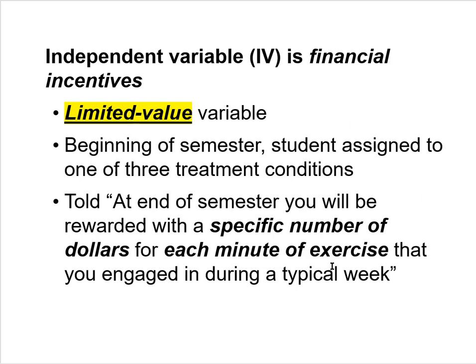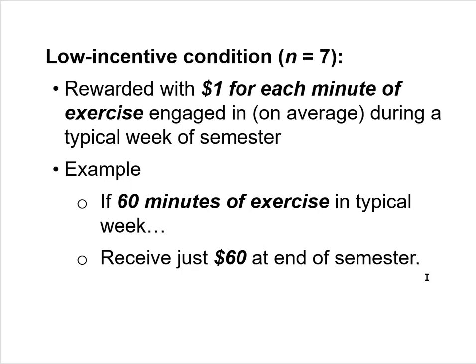Financial incentives is a limited value variable — a variable that consists of two to six conditions. At the beginning of the semester, each student was randomly assigned to one of three treatment conditions. In the low incentive condition, seven subjects are told they'll be rewarded with one dollar for each minute of exercise they engage in on average during a typical week of the semester.